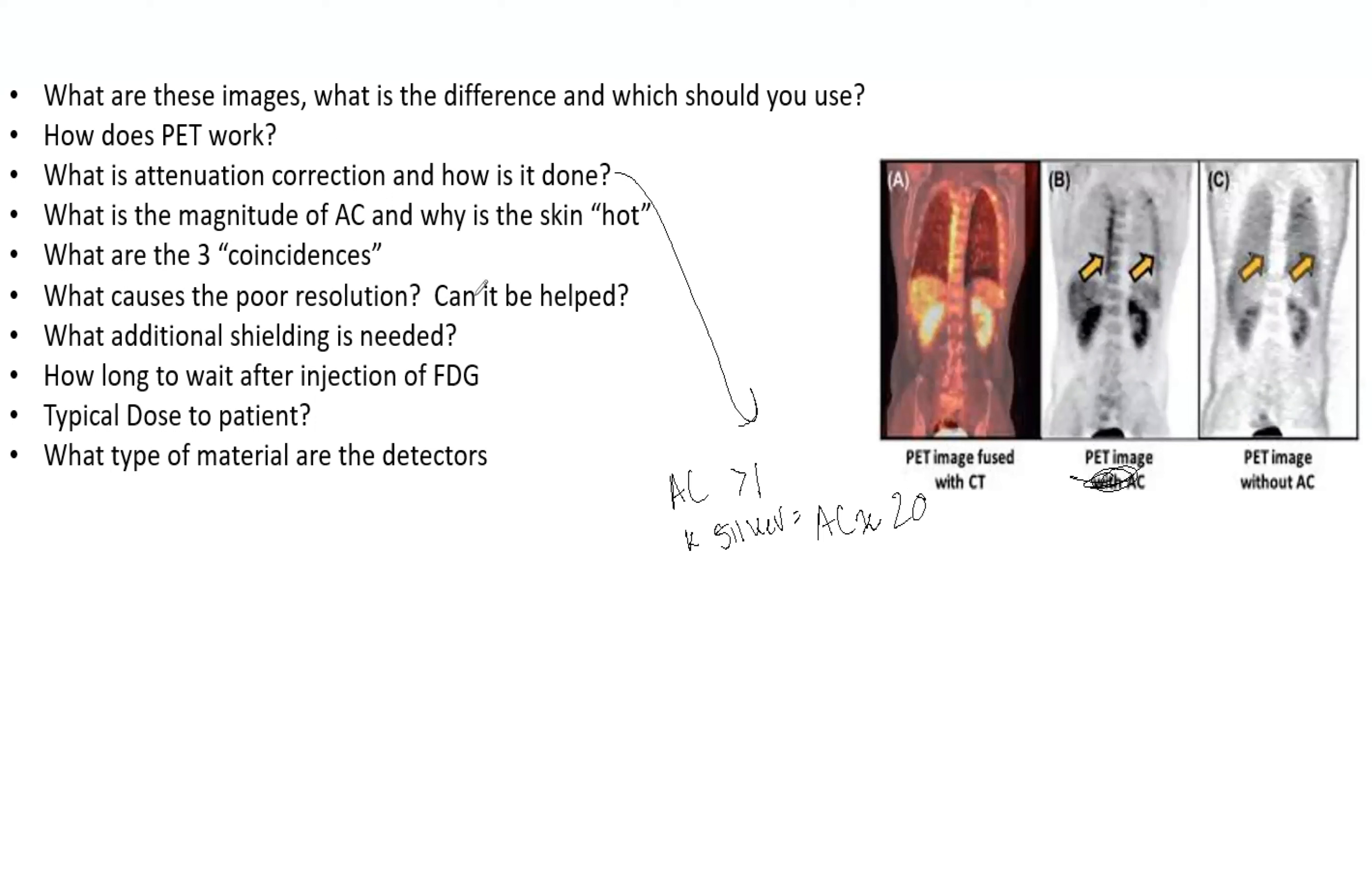Now what causes the poor resolution and can it be helped? So annihilation radiation is made about one millimeter from the positron emission. And it isn't exactly at 180 degrees. It's more like 180 plus or minus 0.25 degrees. So when the positron and electron interact and the KV say there's interaction site here, the photons don't go in perfect 180 degrees.